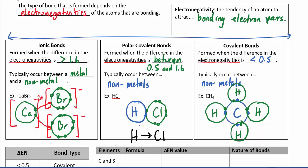Because the electrons spend more time closer to chlorine, that chlorine ends up a little bit negative and the hydrogen a little bit positive. Compare this to the ionic case: calcium completely lost electrons and became positively charged; bromine gained electrons and became negatively charged. In the polar covalent case, chlorine doesn't completely rip the electrons away, but they spend more time there, giving chlorine a partial negative charge (δ−) and hydrogen a partial positive charge (δ+). The delta symbol means partial — not fully charged, just slightly.